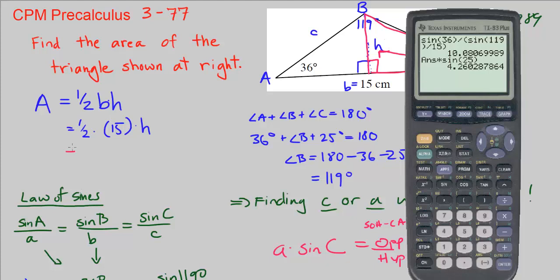Now that we have h, we can get the area of the triangle. It's just 1 half times 15 times this big number here, 4.26 dot dot dot. I'm going to plug this in, so it's this number times 15 times 1 half. I can put them in any order because multiplication can happen in any order.